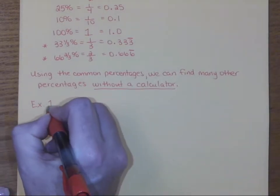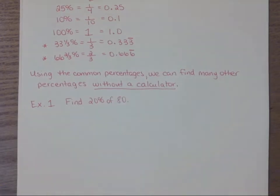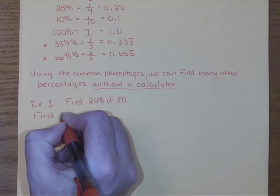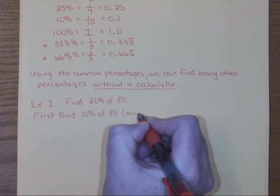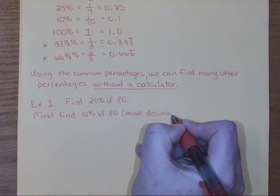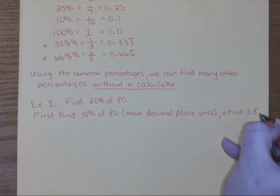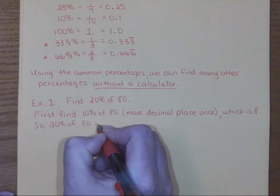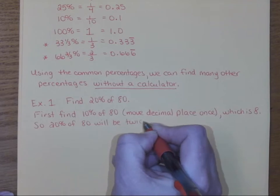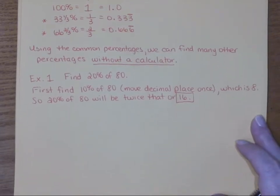Let's look at a few examples. If I told you to find 20% of 80 — we don't really have a benchmark for 20%, but we do have one for 10%. So you could find 10% of 80. The trick is you move the decimal place once. So 10% of 80 is 8. But we want 20%, which is double 10%. So 20% of 80 will be twice that, or 16. The answer is 16, but it's really more about the mental thought process.